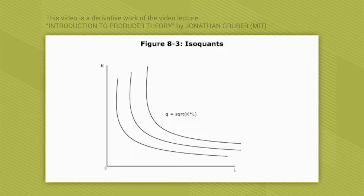Let's go to figure 8.3. When you're trading off K and L and deciding how to produce, you get what are called isoquants. Isoquants are the parallel to indifference curves — it's all the same mechanics. Just as there were sets of goods across which you were indifferent, isoquants are sets of inputs along which production is the same.